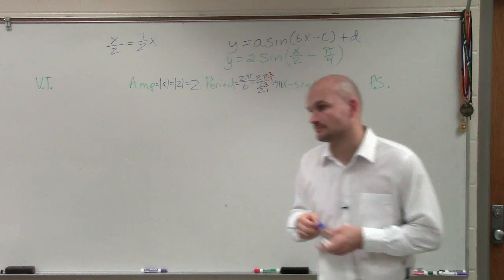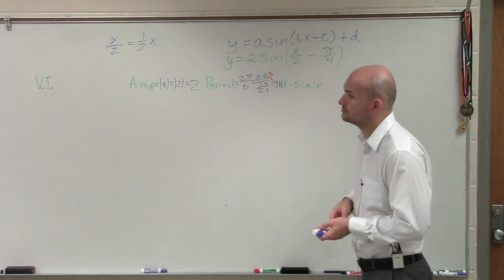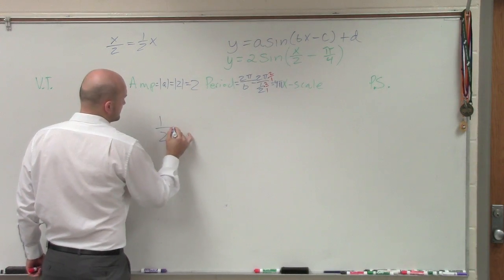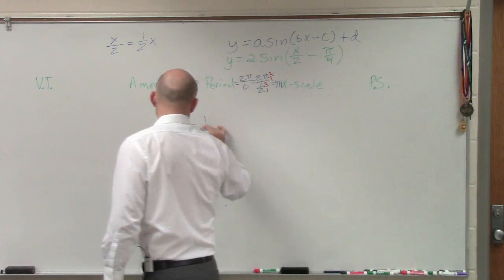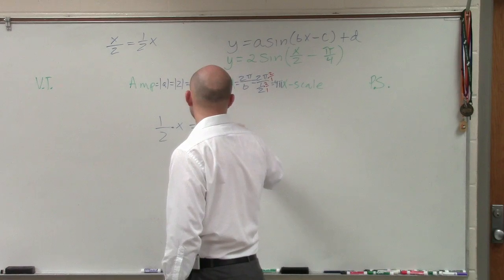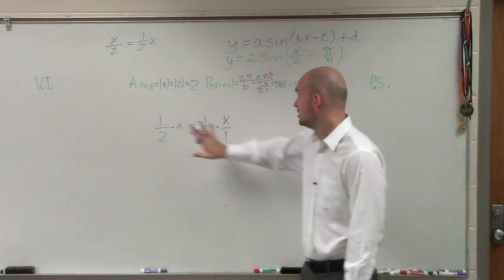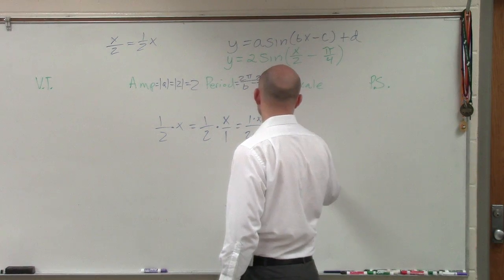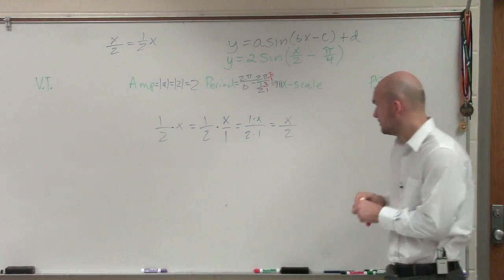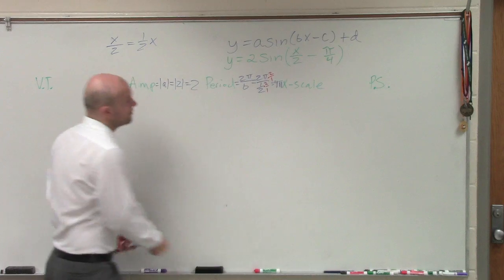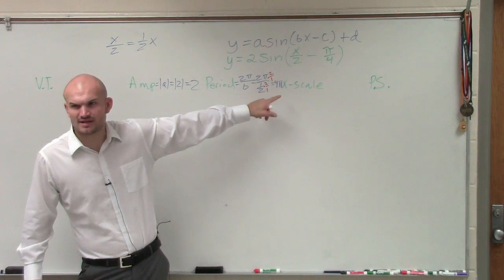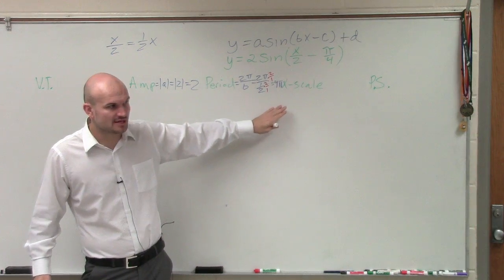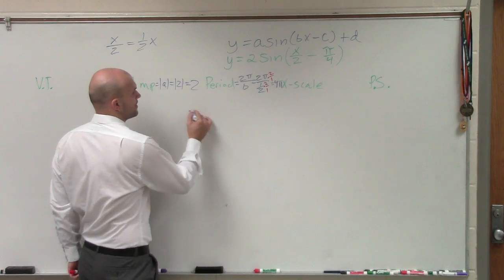Can you go over how you want 1 half x to be? If I was going to say 1 half times x, I could change x into a fraction times x over 1. This is all the same thing. Multiply across. This is 1 times x over 2 times 1, which equals x over 2. So it's the exact same thing, just a different way to write it. Does everybody see how I got 4π?